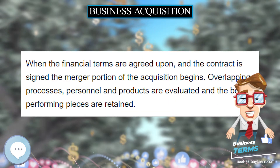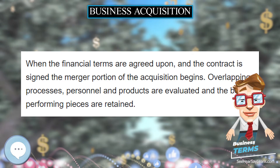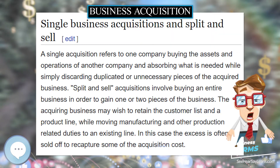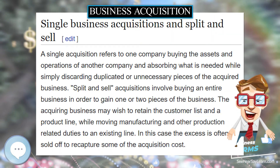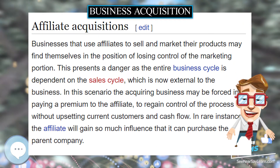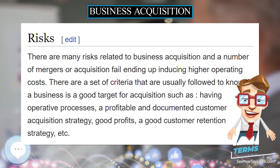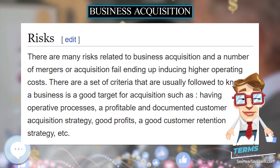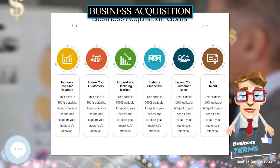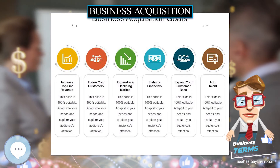Split and sell acquisitions involve buying an entire business in order to gain one or two pieces of it. The acquiring business may wish to retain the customer list and a product line while moving manufacturing and other production-related duties to an existing line. In this case, the excess is often sold off to recapture some of the acquisition cost.